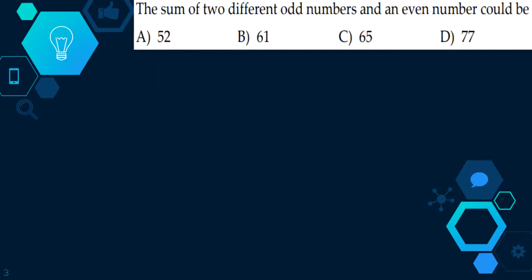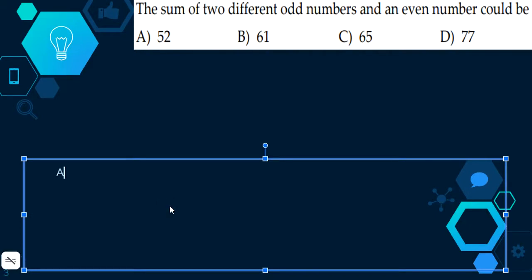The next question is, the sum of two different odd numbers and an even number could be. This is kind of like a trick question. Let's just use two random different odd numbers and an even number. Let's use three and five as odd numbers and two as an even number. Three plus five plus two is ten, which is even. And let's try five, seven, and four. Five plus seven is twelve, plus four is sixteen. We can use any two different odd numbers and an even number, we can always get an even number as the answer. The even number in this case of the four options is 52. So our answer would be A, 52.